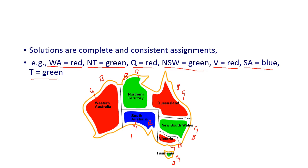If we assign red color to a different starting region, green and blue will be assigned to the remaining regions alternatively. For a given problem there can be many different solutions. The only requirement is that we need to satisfy the constraints.